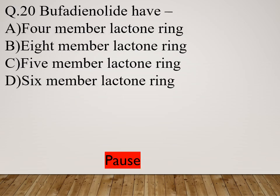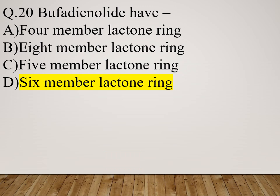Question 20: Bufadienolide has which type of lactone ring? Option A: 4-member lactone ring. Option B: 8-member lactone ring. Option C: 5-member lactone ring. Option D: 6-member lactone ring. The right answer is 6-member lactone ring.